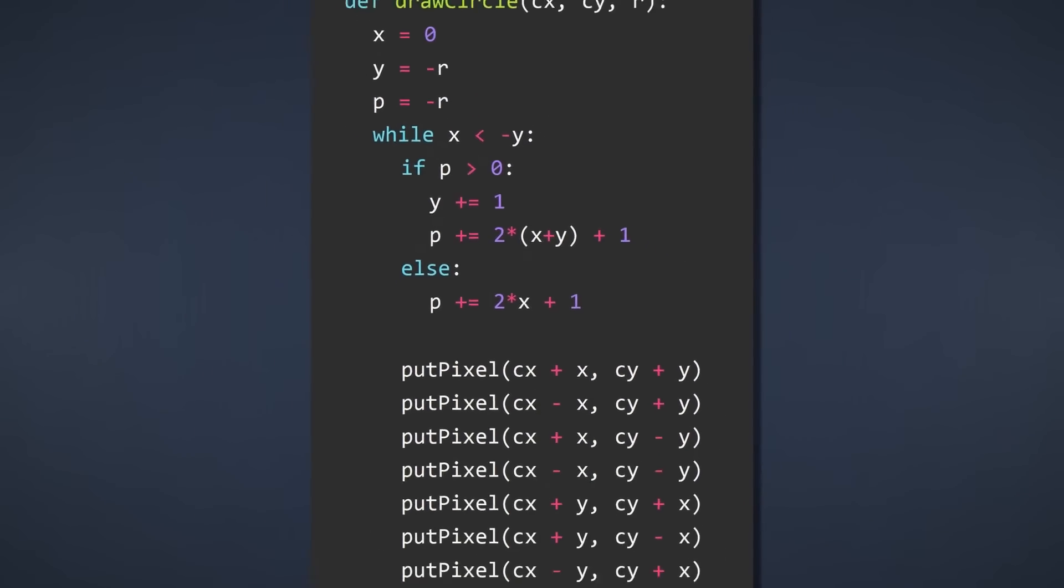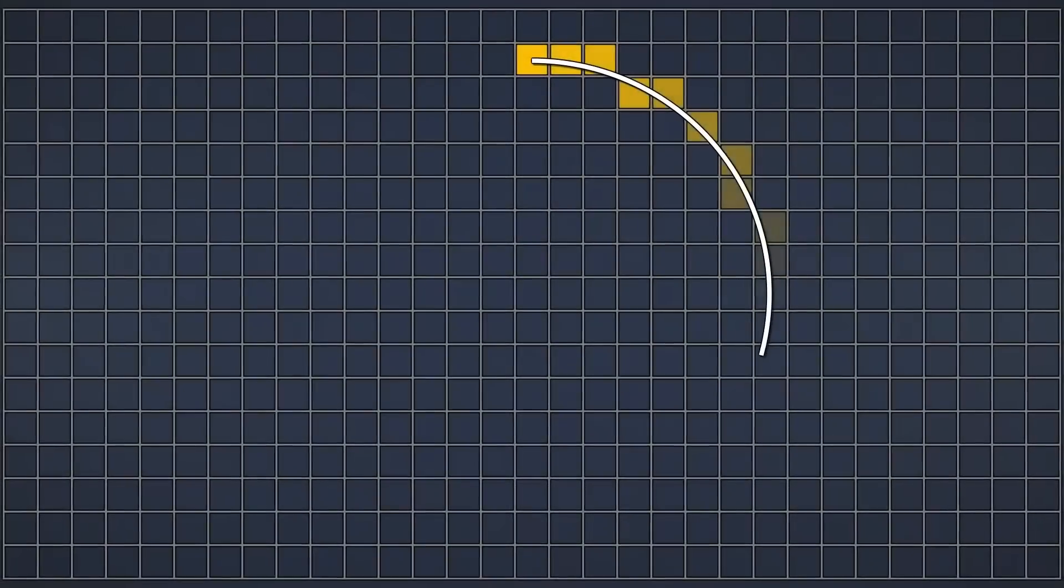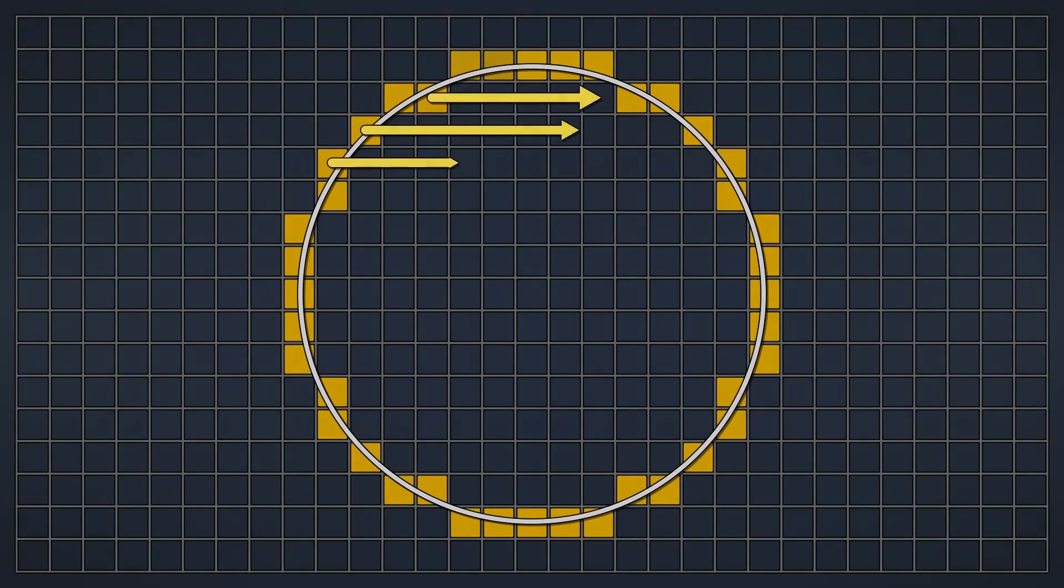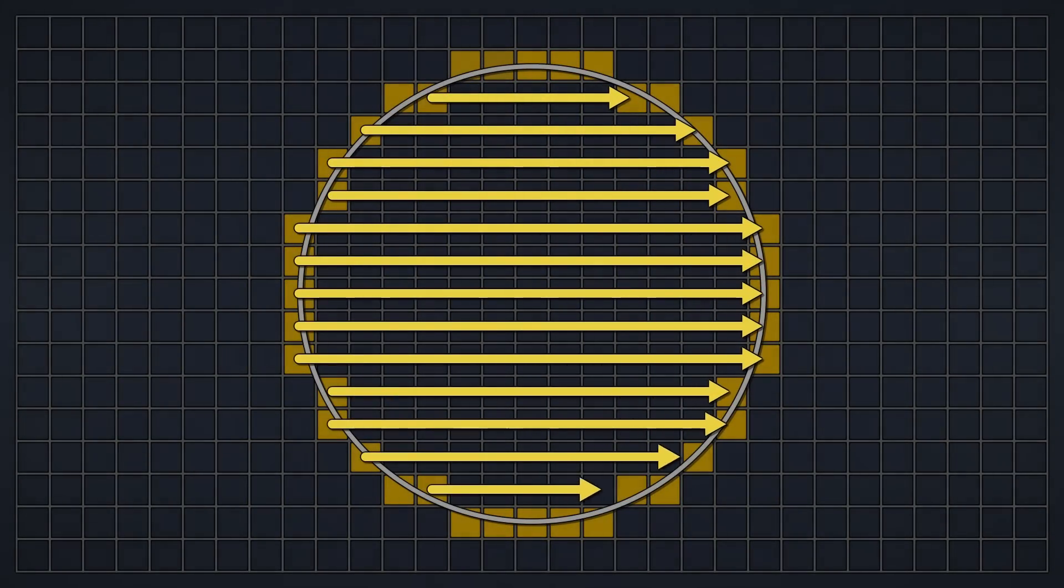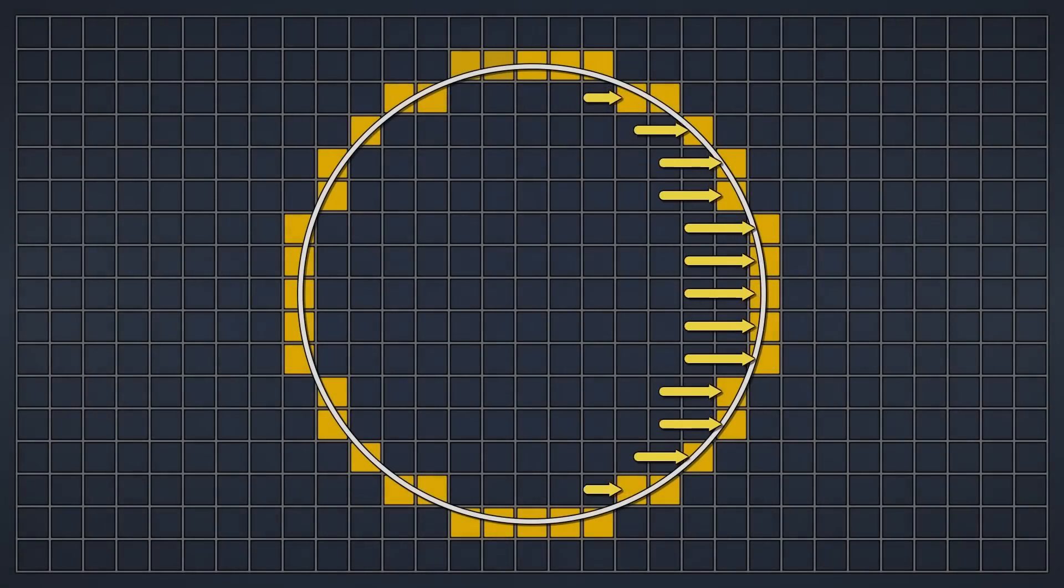Perfect. This is our finished implementation. Of course, this is not the only way to draw a circle. There are other algorithms that are very similar to this one, but slightly different. It's also worth mentioning that we can draw filled circles using these algorithms. When placing pixels, we can simply draw perfect horizontal lines for pairs of pixels that have the same y coordinate. But implementing that is pretty trivial at this point, so I won't waste your time. Thank you for watching, and I hope you learned something.